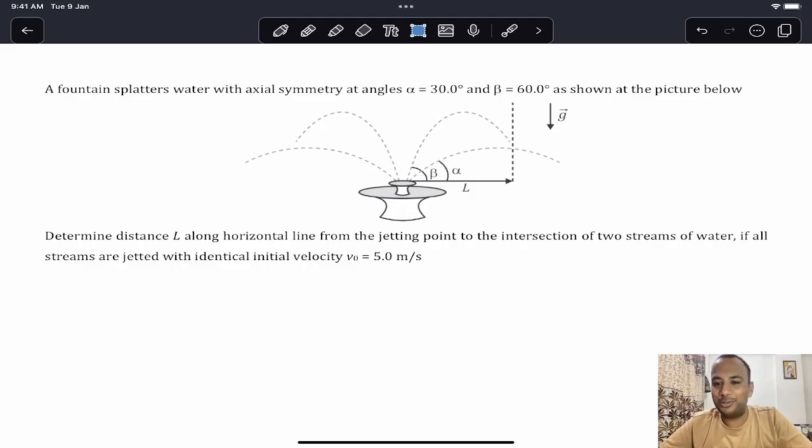Hello my dear students, welcome back to the session. Today we have a big question. In the figure below, determine the distance L along the horizontal line from the jetting point to the intersection of the two streams of water, if all streams are jetted with identical initial velocity.